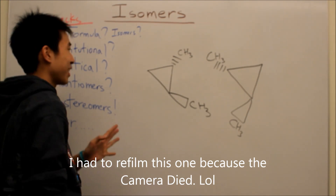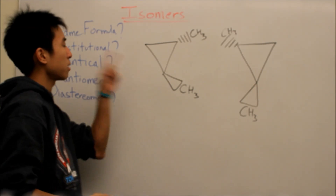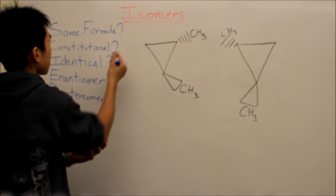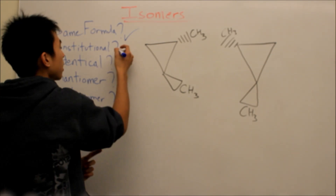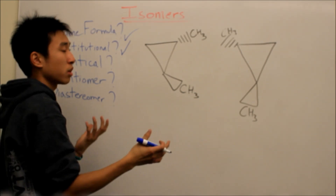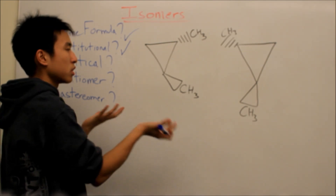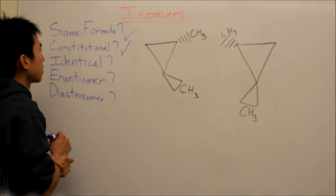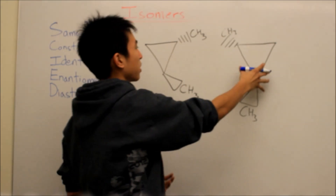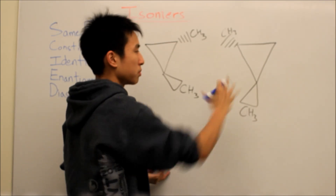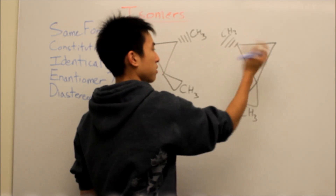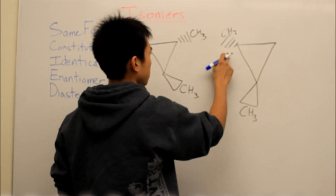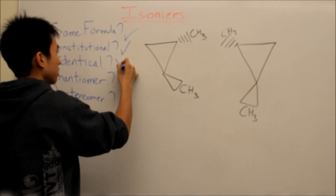Now we're going to look at these two molecules here. They look kind of the same — they both have a wedge and a dash, so they have the same chemical formula already. Are they constitutionally the same? Yes, so they are not constitutional isomers. Are they identical? Is there any way we can make this molecule superimpose onto this one? Nope — because no matter how you turn it, rotate it, or flip it, they'll never match up. The wedge is here and the dash is here, so they're not identical molecules.